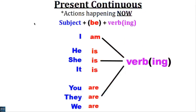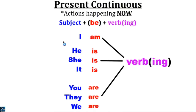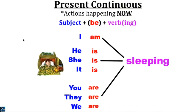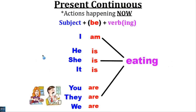So today's grammar is the present continuous — actions happening now, continuous actions. We use the subject, 'be', and the verb in the continuous form: verb plus I-N-G. For example: I am cooking. Or he is sleeping. Or they are eating.